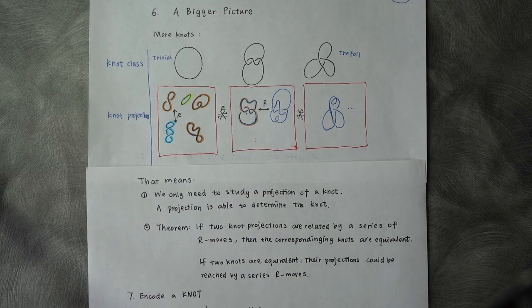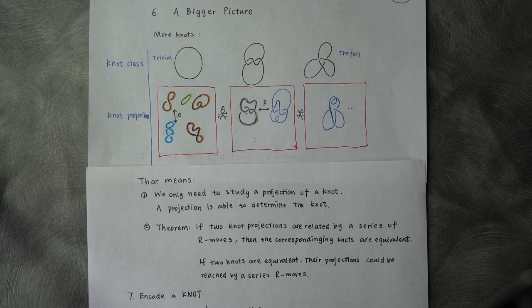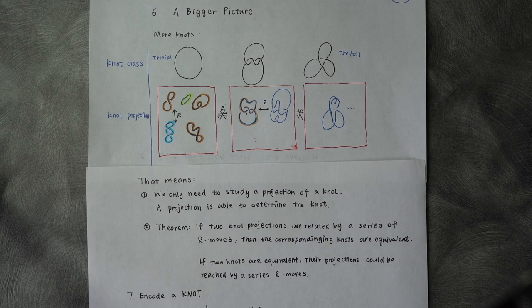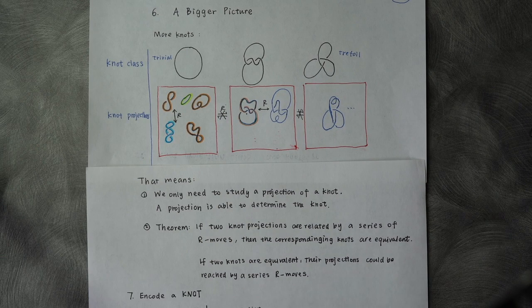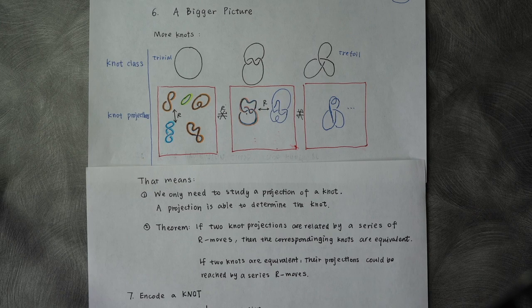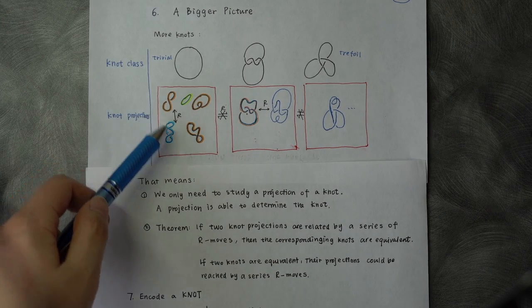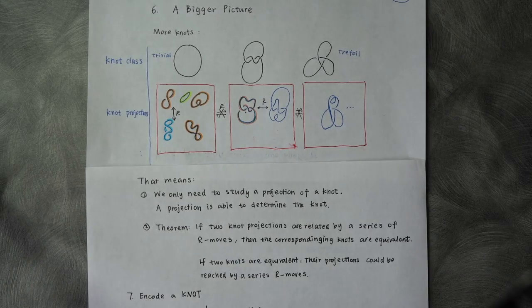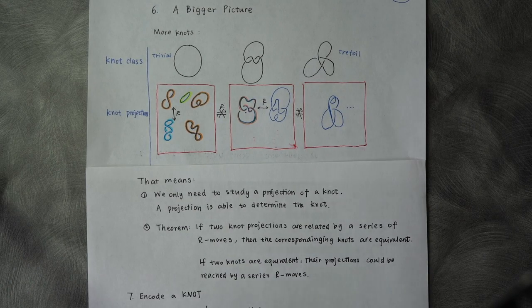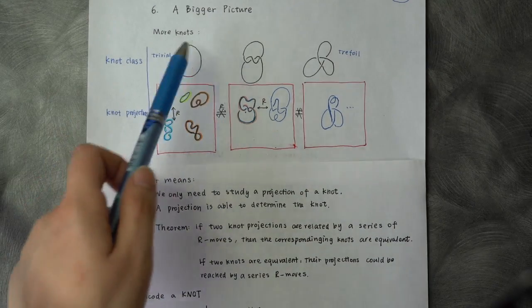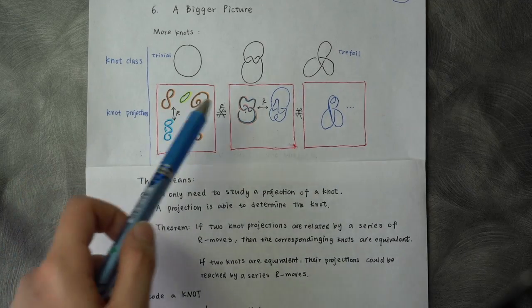if we are given this kind of knot projection, then it contains enough information of its knot class. If two knot projections are related by a series of Reidemeister moves, for example, this orange one and this blue one, then the corresponding knots are equivalent, because this trivial knot is the knot for those two knot projections.